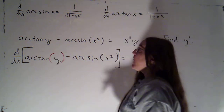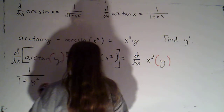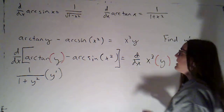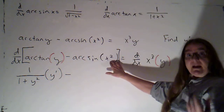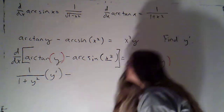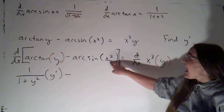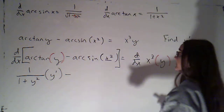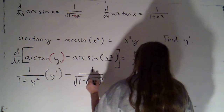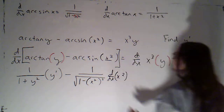I first take the derivative as if y is my variable, so I'm just plugging in y. It's going to become 1 over 1 plus y squared, times the derivative of the inside part, which is y prime. Minus arc sine of x squared — that's also a function composition. Here my inside part is x squared, so in the formula for the derivative of arc sine I'm plugging in x squared. This becomes 1 over root of 1 minus x squared squared, times the derivative of that inside part x squared.